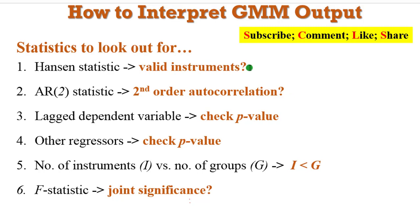Check out the value of the Hansen statistic. This tells you whether you are using valid instruments. Look out for the value of the AR2 statistic. It tells you whether your model is suffering from second-order serial correlation. Check the p-value of the lag-dependent variable, whether it's significant or not. Check the p-values of other coefficients to see how many of your coefficients are significant. Make sure that the number of instruments is lower than the number of groups. Look out for the value of the F-statistics and its p-value because they tell you whether your regressors are jointly significant in explaining the dependent variable.